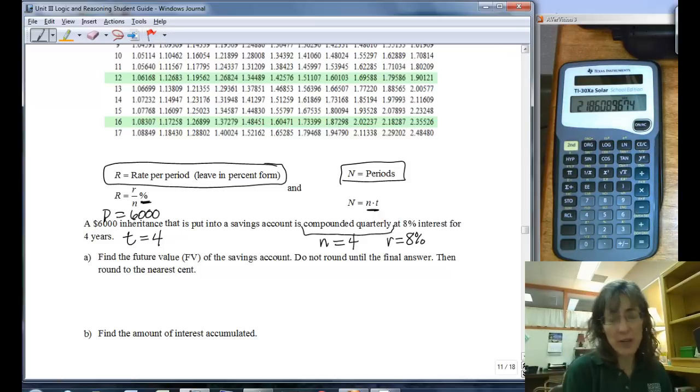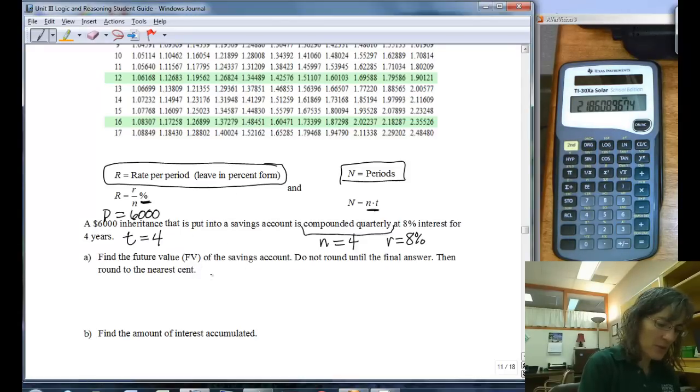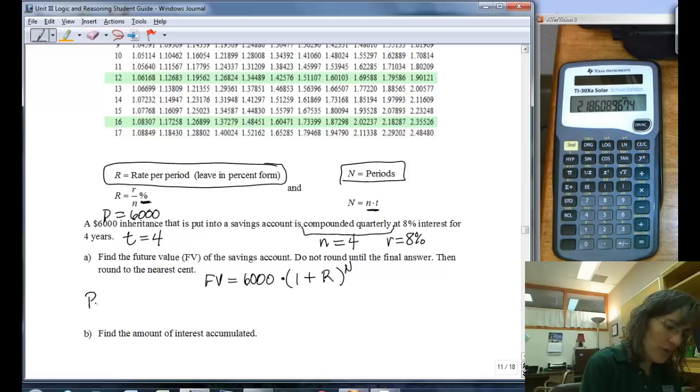I want to find the future value, or the A. So I have future value equals, and I need to do a table lookup, but I'm going to multiply the results of that by the 6,000. And I have one plus my big R raised to the big N.